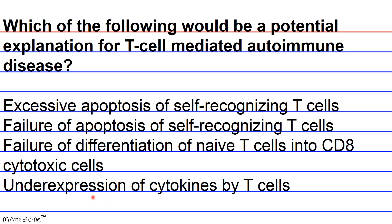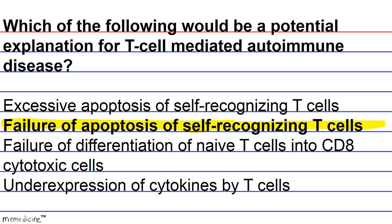The correct answer is B. Overexpression — not underexpression — of inflammatory cytokines contributes to autoimmune disease, as mentioned in the passage. CD8 cytotoxic cells play less of a role in autoimmune disease than CD4 cells, so option C is incorrect. Inappropriate apoptosis, specifically failure of apoptosis of cells that recognize self-antigens, is most likely the explanation for many autoimmune diseases, rather than excessive apoptosis. Therefore, the correct answer is B.